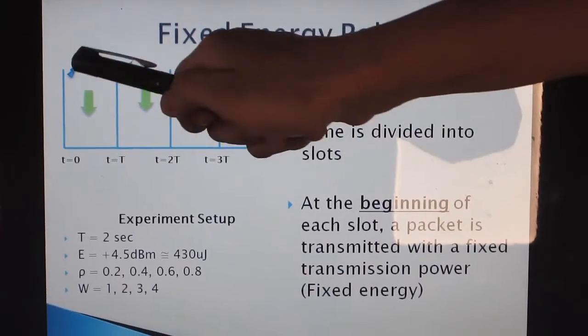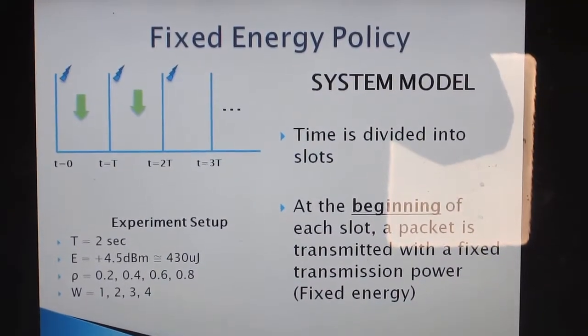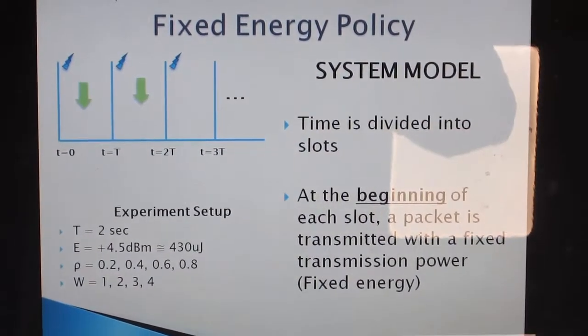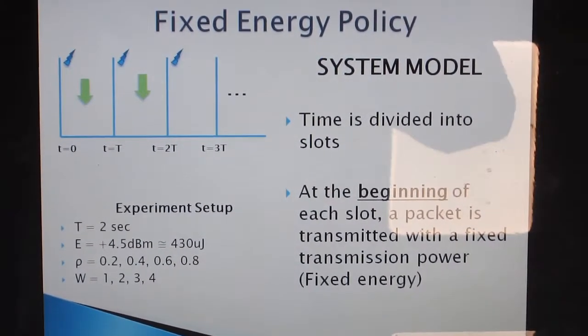At the beginning of each slot, a packet is transmitted with a fixed transmission power. In our experiment, it is plus 4.5 dBm which consumes approximately 430 microjoules.